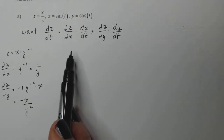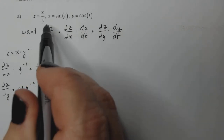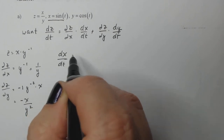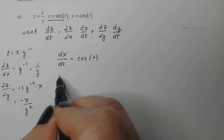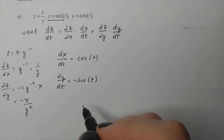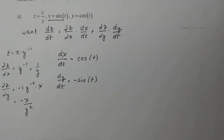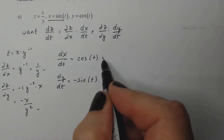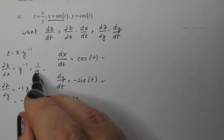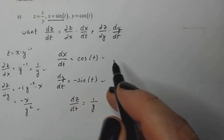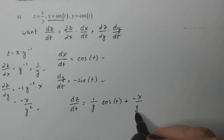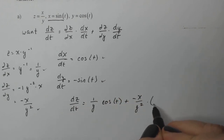Now I need the derivative of x with respect to t. Thinking calc one: the derivative of sine is cosine of t. And I need dy/dt: the derivative of cosine is minus sine of t. So now I take those four things and put them into the formula. dz/dt equals one over y times cosine of t, plus minus x over y squared times negative sine of t.